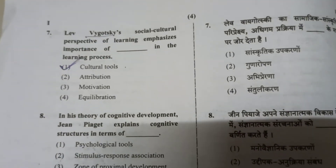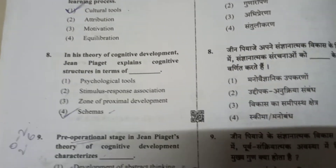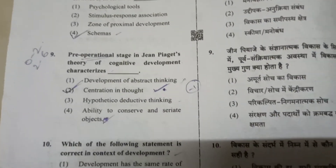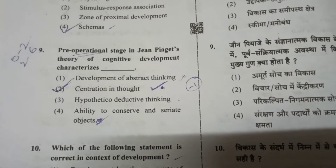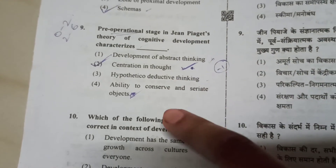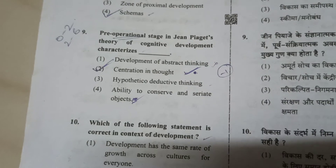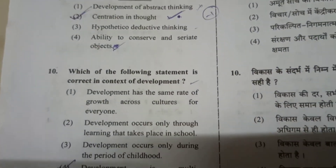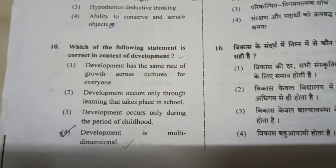The 8th answer is 'cultural tools.' The 9th one — here I made one mistake. I selected option 4 but it is wrong; the correct answer is option 2. So I lost one mark there.